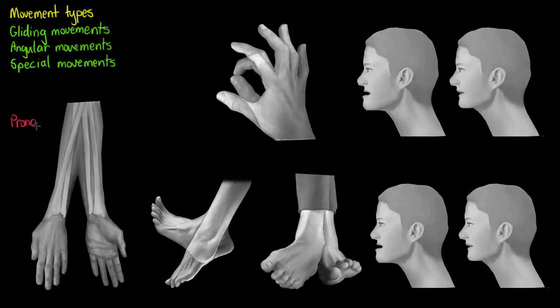The first special movement is pronation, meaning to turn forward. If we stand in the anatomical position with our thumbs outward and rotate our palms so that the thumb becomes medial to our pinky, we will see that the radius wraps around the ulna, as you can see in this illustration here.